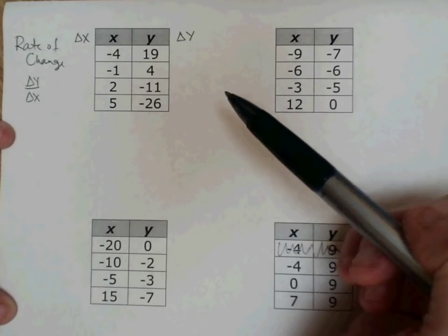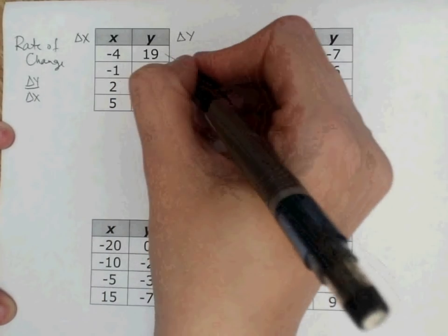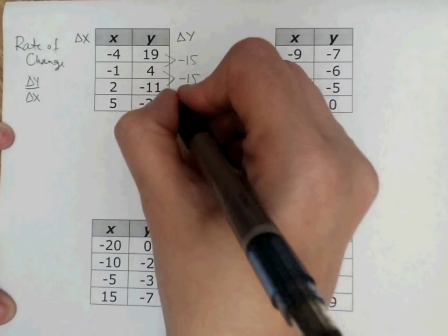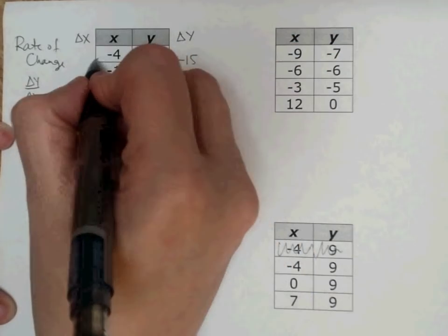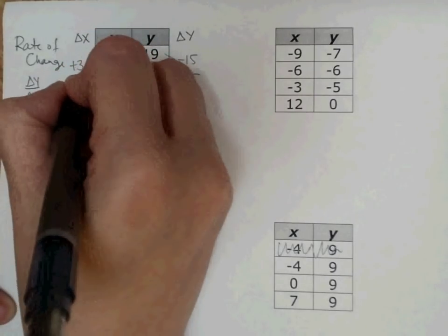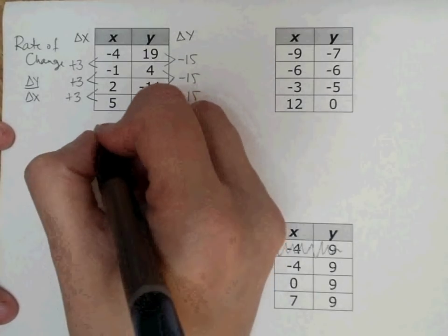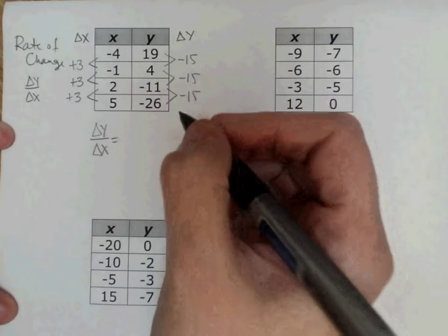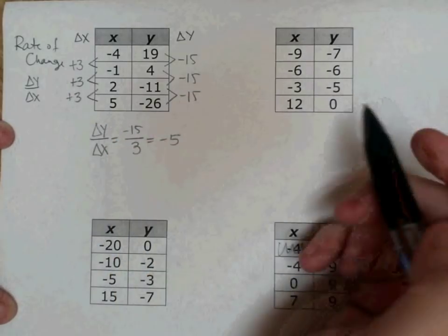When we look at rate of change in a table, what we're going to do is figure out how does my y change. So 19 minus 15 is 4, 4 minus 15 is 11, 11 minus 15 is 26. So I know how my y is changing. Now let's look at how my x is changing. Negative 4 plus 3 is 1, negative 1 plus 3 is 2, 2 plus 3 is 5. Now, when I take my change in y divided by my change in x, I get negative 15 over 3, which reduces to negative 5.